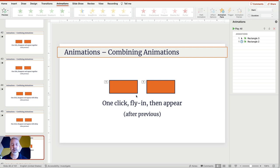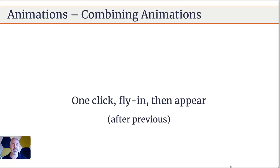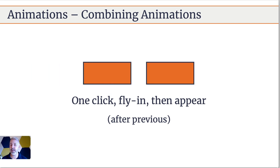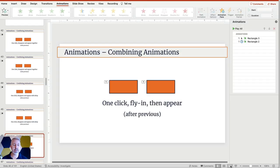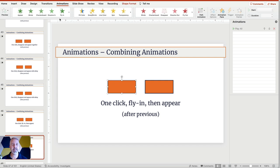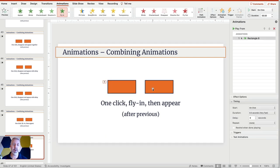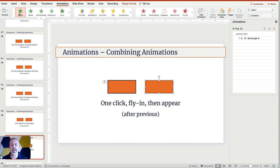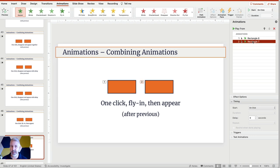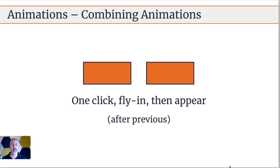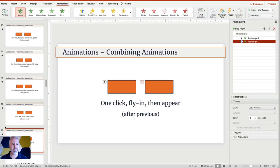Now a little bit more complicated: we'll take this another step further where we have an animation fly in and then something appears. We have this fly in, and then we have this appear — and for the second thing appearing we set it to happen after previous. So one click is all it takes: fly in, then it appears. Simple, but now we can add effects to this situation as well.